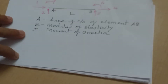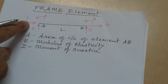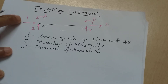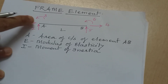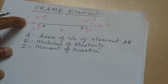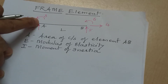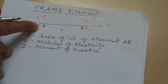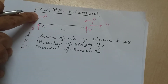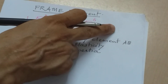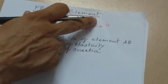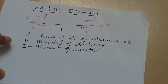This frame element AB will have 3 degrees of kinematic indeterminacy at each joint. At joint A: first is displacement in the X direction, second is displacement in the Y direction, and third is rotation about the Z axis. The same three are possible at the other joint as well.